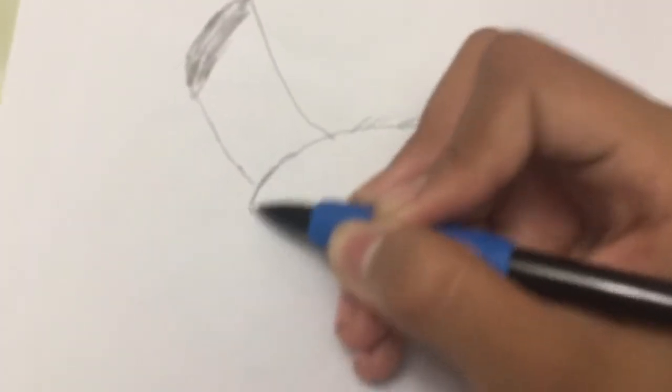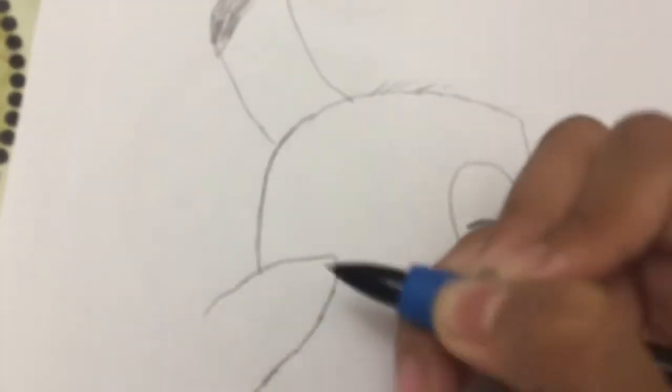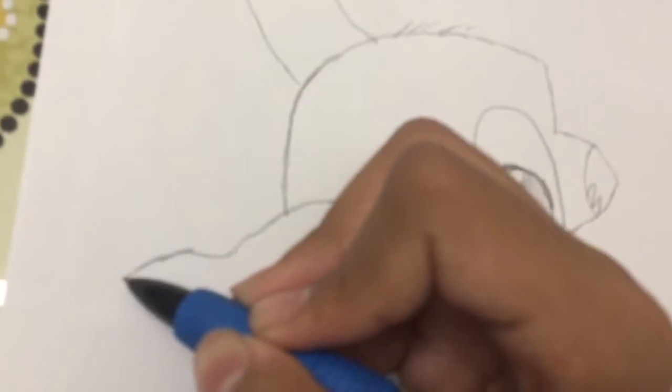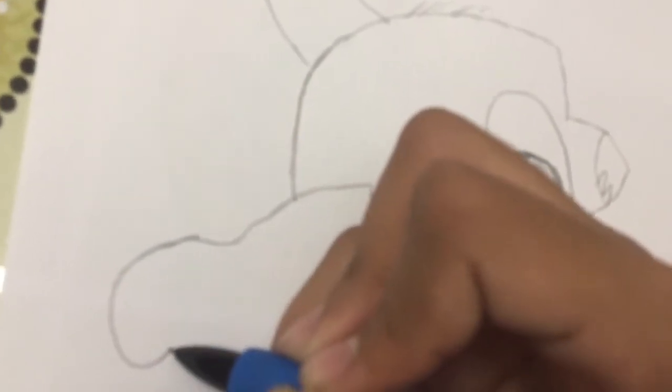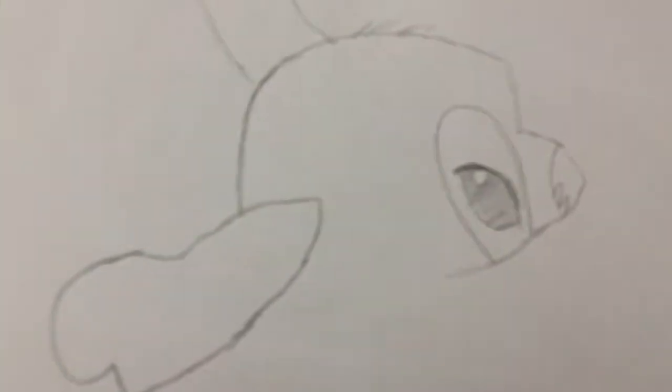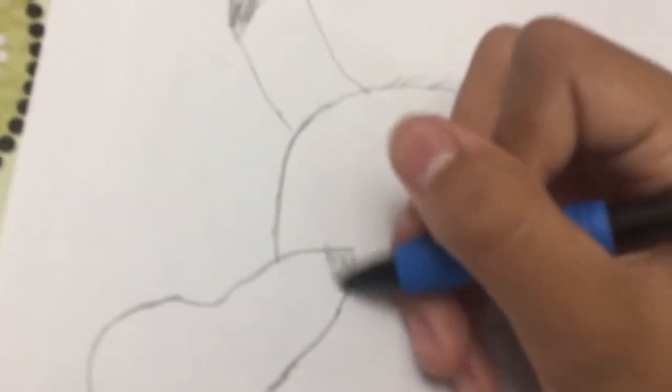And then you come down, and then there's another ear right here. And then it goes up, like this. Curve in and come back down. And then like we did on top, we shade here. We shade downwards this time, like this.